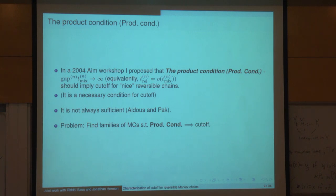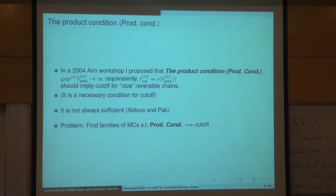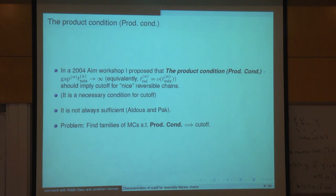If we believe the product condition is still very relevant — we know it's necessary — we need additional side conditions to ensure cutoff. Most proofs of cutoff by now require extremely fine understanding of the chain, either using representation theory, explicit diagonalization, or in the case of Lubetzky and Sly, very refined analysis of the Ising model. We'd like to conclude that a chain has cutoff by more rough considerations, since it's usually easier to control the mixing time up to a constant than to find the constant.